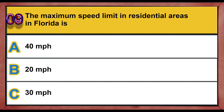Question 9. The maximum speed limit in residential areas in Florida is: A. 40 miles per hour. B. 20 miles per hour. C. 30 miles per hour. Correct answer is C: 30 miles per hour.